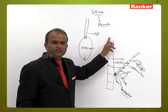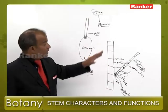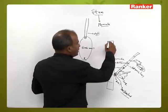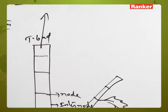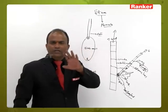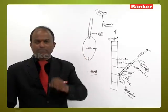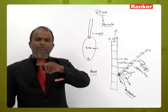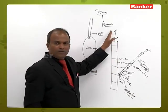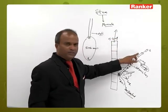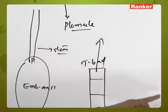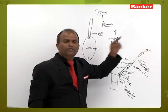The terminal bud is present at the tip of both the stem and the branches. The vertical growth of the stem is carried out by the terminal bud, and the horizontal growth of the branches is also done by the terminal bud. Axillary buds are present not only in the axils of the stem but also in the axils of the branches.